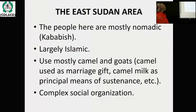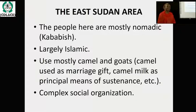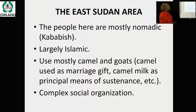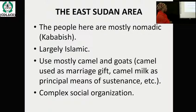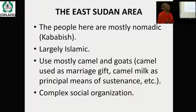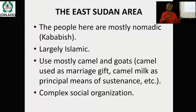The East Sudan area has people who are mostly nomadic and practice Islam. They use camel and goat for marriage rites and even death ceremonies, and they consume products from these animals. They have a very strong and highly stratified social organization where everyone knows their place in society and does not exceed their bounds.